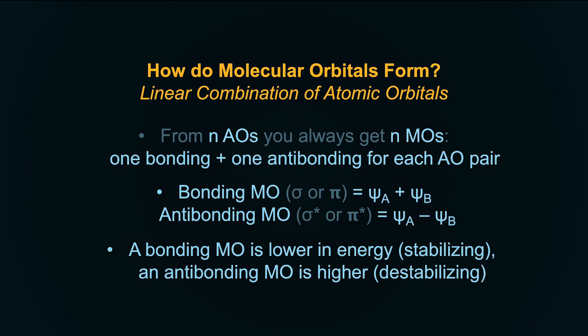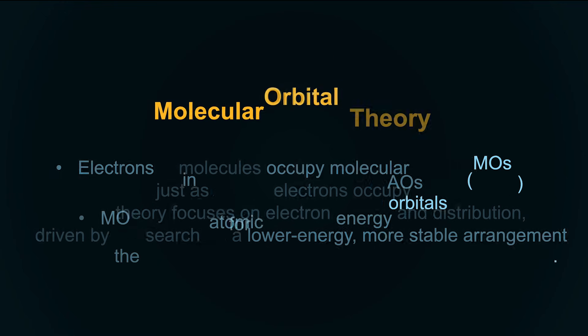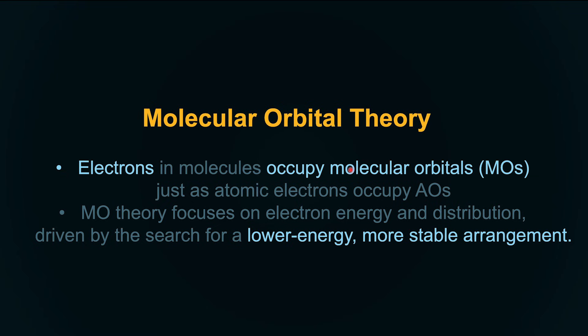A bonding molecular orbital is lower in energy because electron distribution is more likely between the nuclei along the axis — a better, more stable state. Anti-bonding is higher in energy; it's a destabilizing state with a node between the nuclei, not along the axis of joining. Molecular orbital theory tells us electrons occupy molecular orbitals to reach a lower energy, more stable arrangement, and it gives you a sense of why and if bonds will form, bond order, shape, energy, and even magnetism.